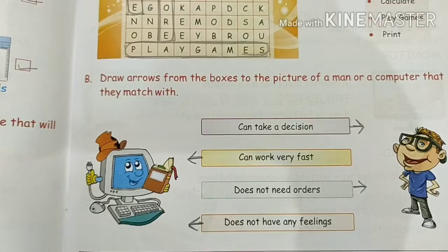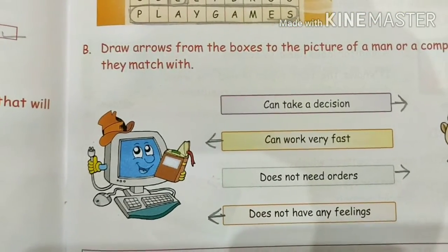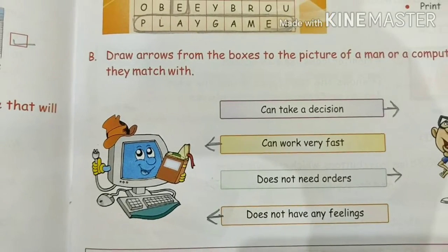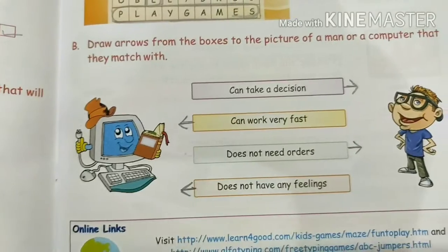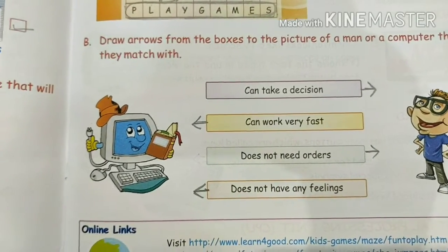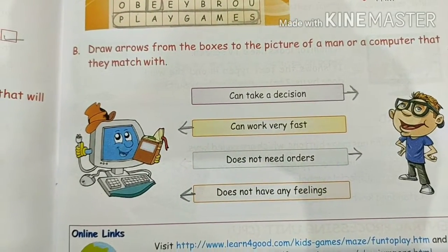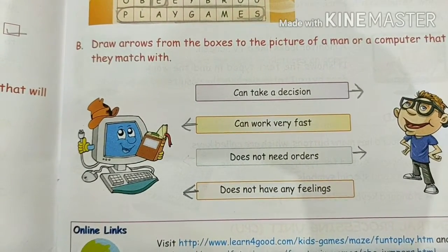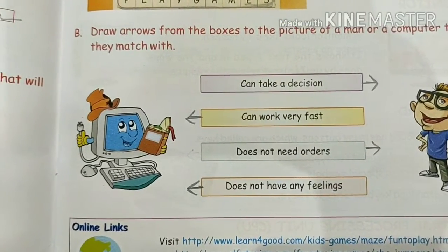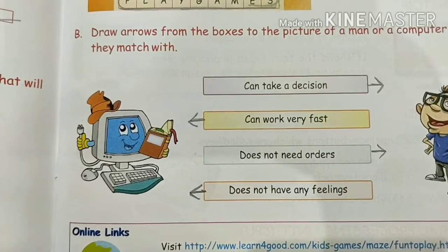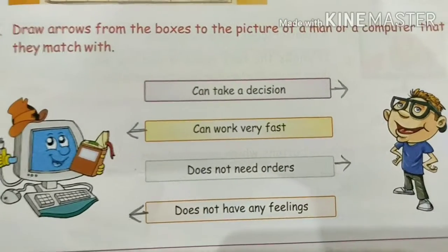Can work very fast — that's definitely a computer. A computer does work very fast; it does all calculations in a second. So the arrow is on the computer side. Does not need orders — who does not need orders? Man. Man can do all their work on their own; they do not need any orders. So the arrow is on the man side.